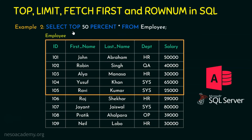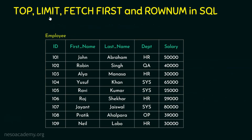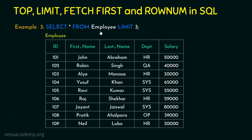We are now done with the TOP keyword. Let's move on to the LIMIT keyword. In Example 3, we are going to use the same table but with the LIMIT keyword. The example query is: SELECT * FROM employee LIMIT n, where n specifies how many rows you want to restrict or limit.